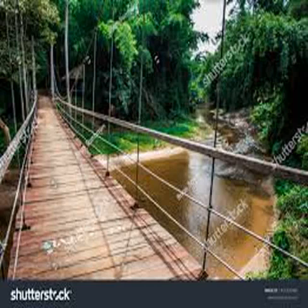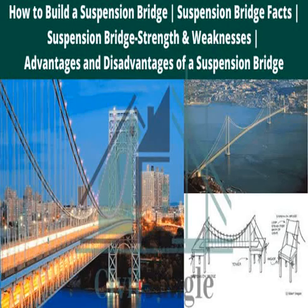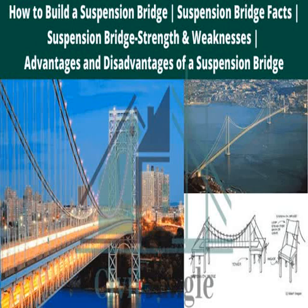The first iron chain suspension bridge in the western world was the Jacobs Creek Bridge in Westmoreland County, Pennsylvania, designed by inventor James Finley. Finley's bridge was the first to incorporate all of the necessary components of a modern suspension bridge, including a suspended deck which hung by trusses. Finley patented his design in 1808 and published it in the Philadelphia journal The Portfolio in 1810.